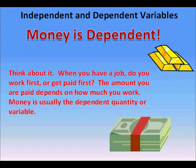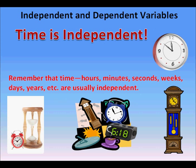One thing to remember is that when it comes to independent and dependent quantities, money is usually dependent. Think about it — when you have a job, do you work first or get paid first? The amount you are paid depends on how much you work, so money is usually the dependent quantity or variable. As another hint, time is independent. When we see units of time in a function, the variable representing that unit of time is usually an independent variable.